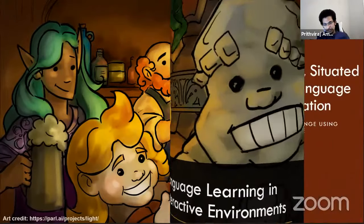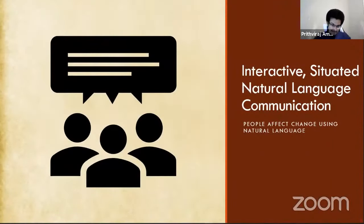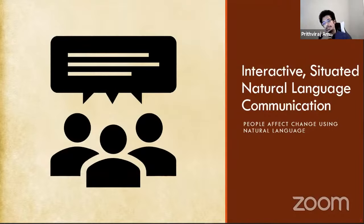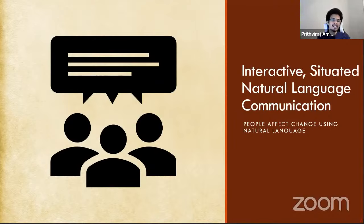Let's jump straight into it. People affect change in the world all the time using natural language, so a solid chunk of our communication is grounded in real world actions. Now think about using that kind of communication to help train agents that operate on language. The question here really is: what is required to get these automated agents to do the things that we as people do so easily?